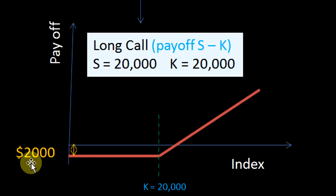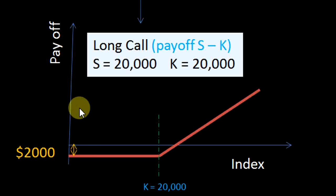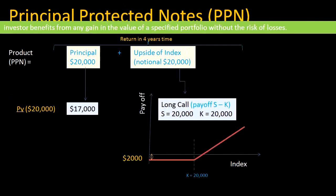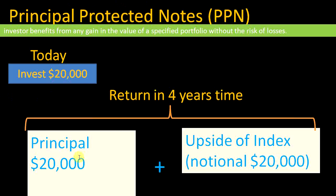We already spent $17,000 on the zero coupon bond, and if we purchase this call option for $2,000, that's a total of $19,000. We can set up this whole structure for $19,000 and sell it for $20,000, making a profit of $1,000.